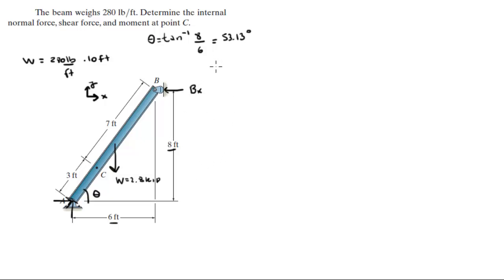So to find BX you know that sum of moments at point A is equal to 0 assuming clockwise is positive. So you get the 2.8 kip times the distance from here to here. You know that from A to the center is 5 feet because it's half of this whole assembly and this whole assembly is 10 feet so half is 5 feet so it's 5 times the cosine of theta because this is a right triangle. And that will give you the moment created by the weight.